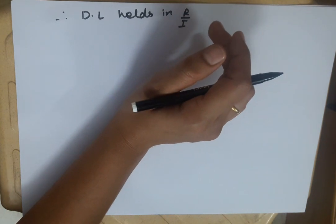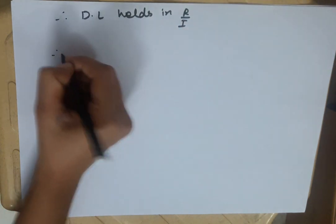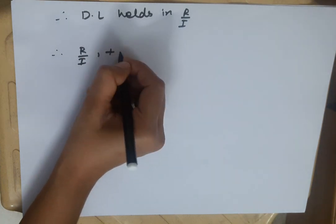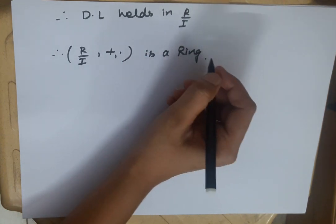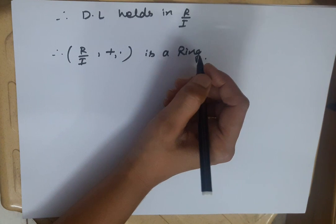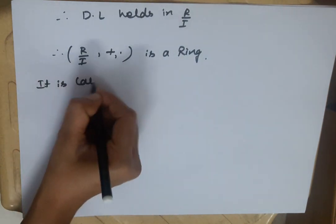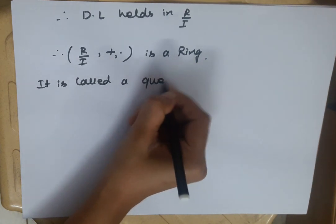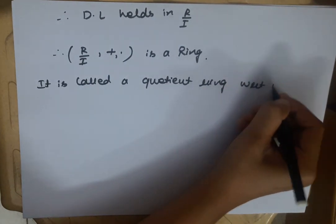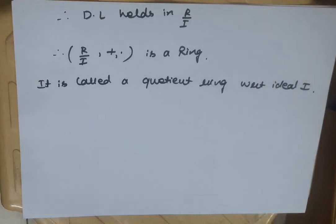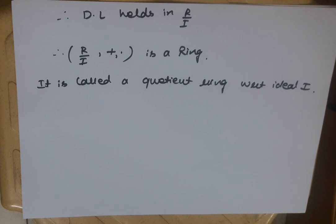Ring की सभी conditions यहाँ prove हो चुकी हैं। Therefore, R/I with respect to plus and dot is a ring. इसे हम quotient ring with respect to ideal I कहते हैं। हर एक ideal की corresponding आप different quotient ring consider कर सकते हो। इस तरह से आपने quotient ring के complete concept को जाना और समझा।